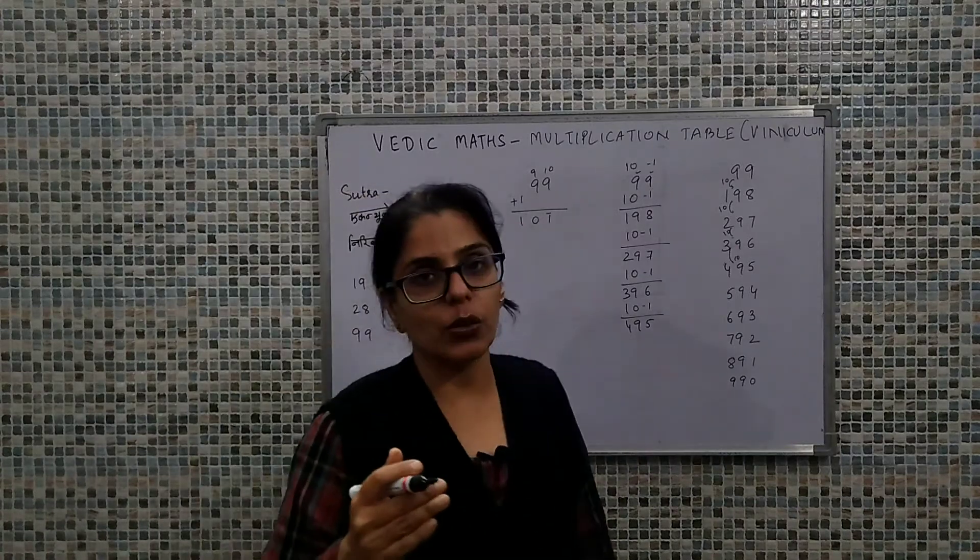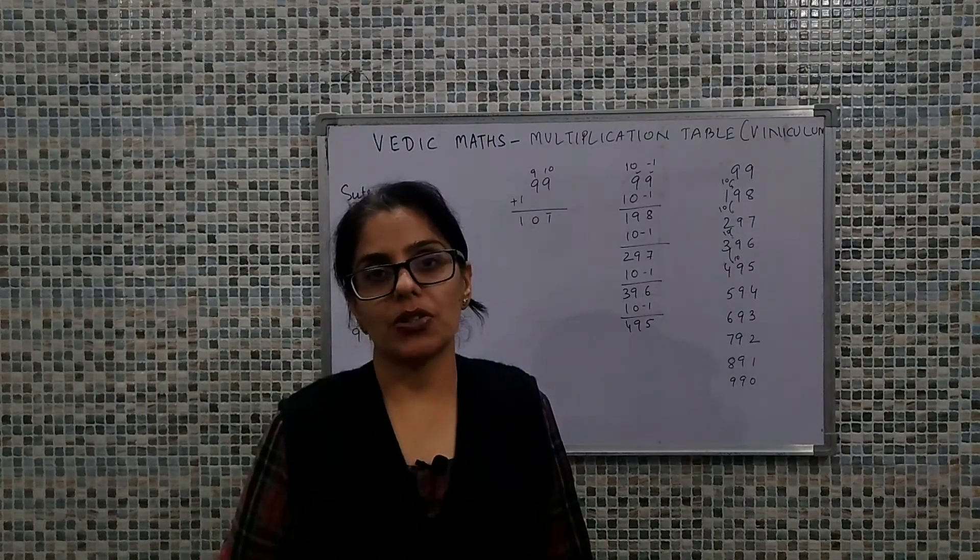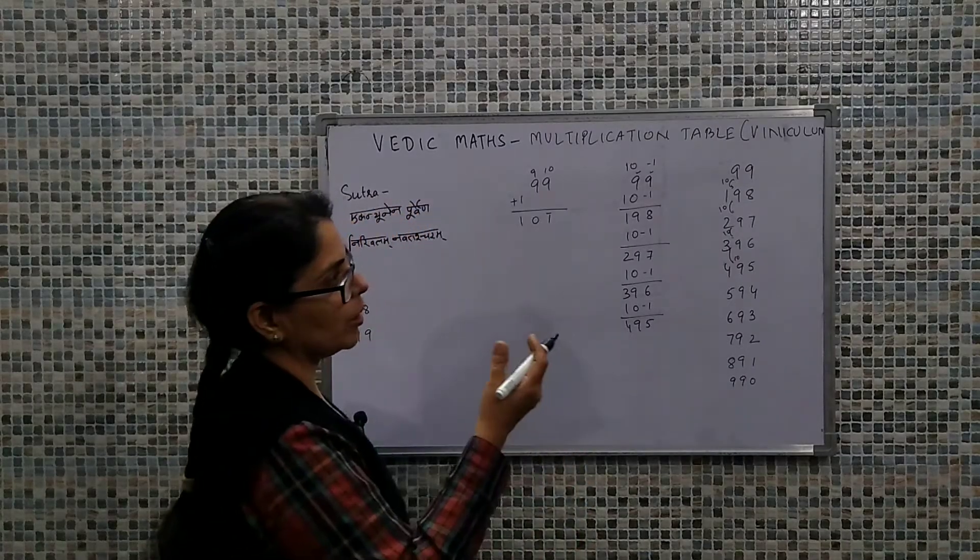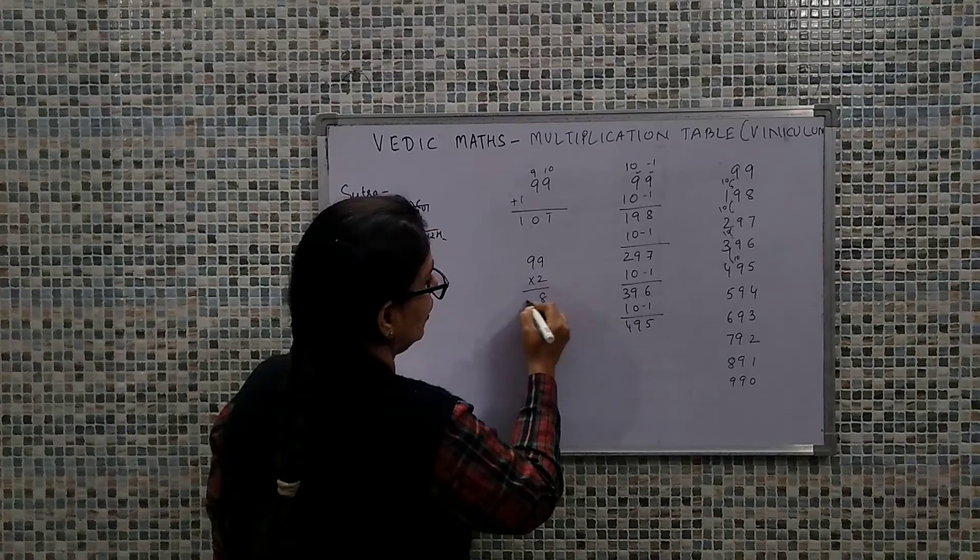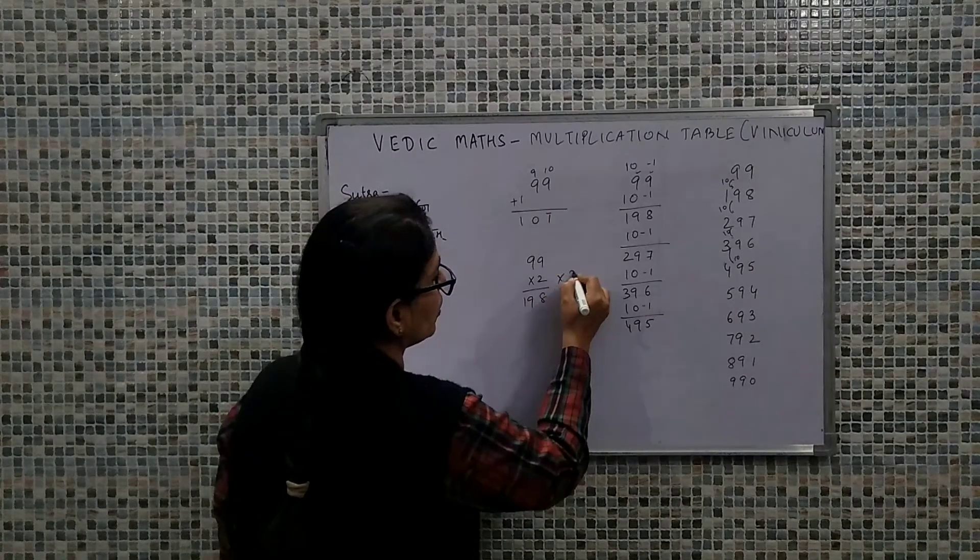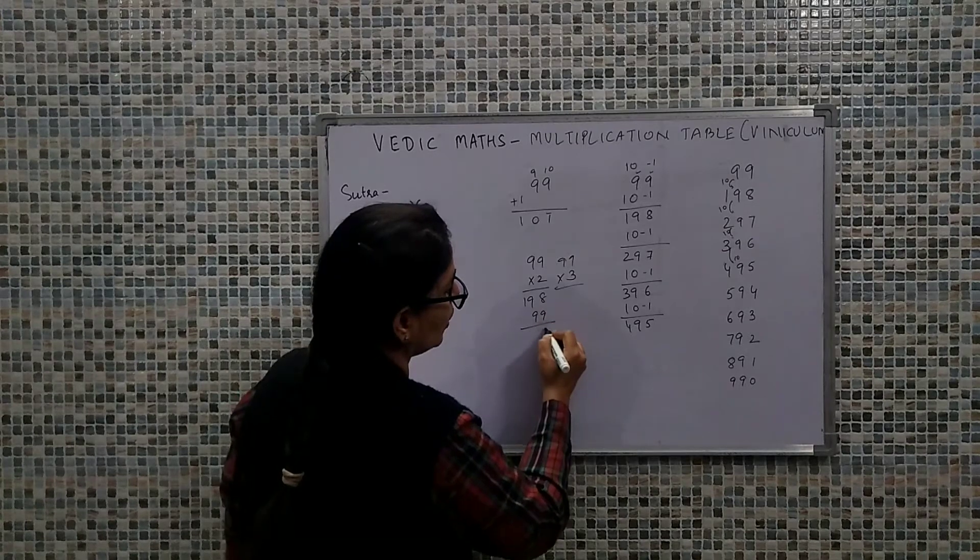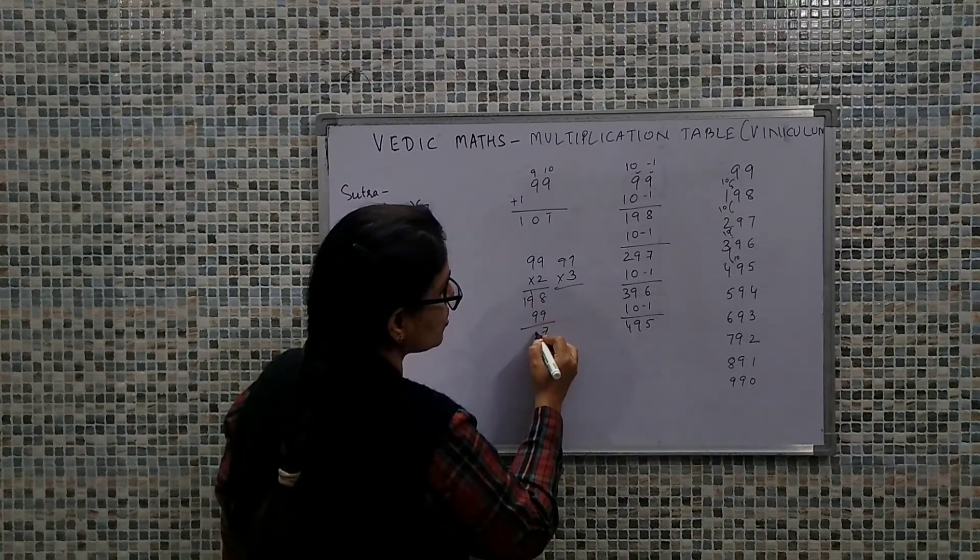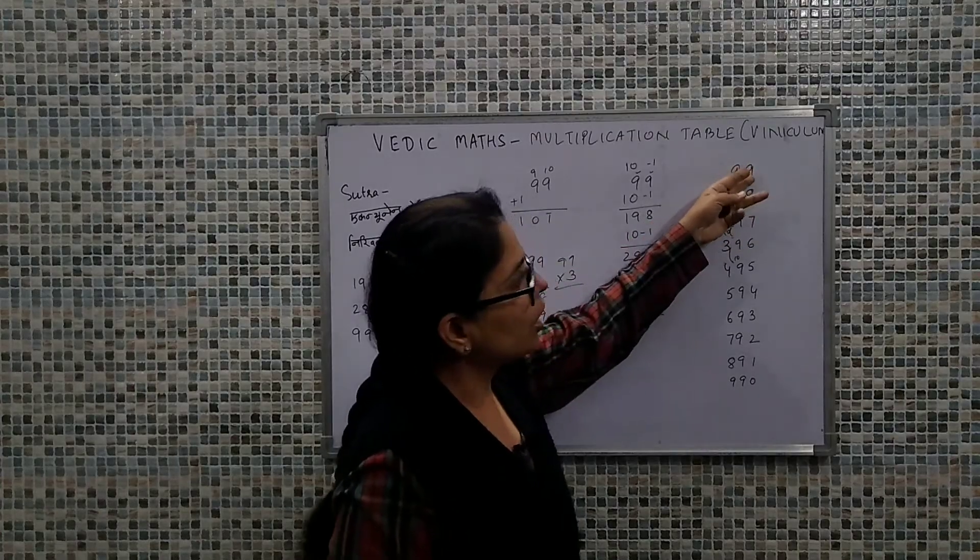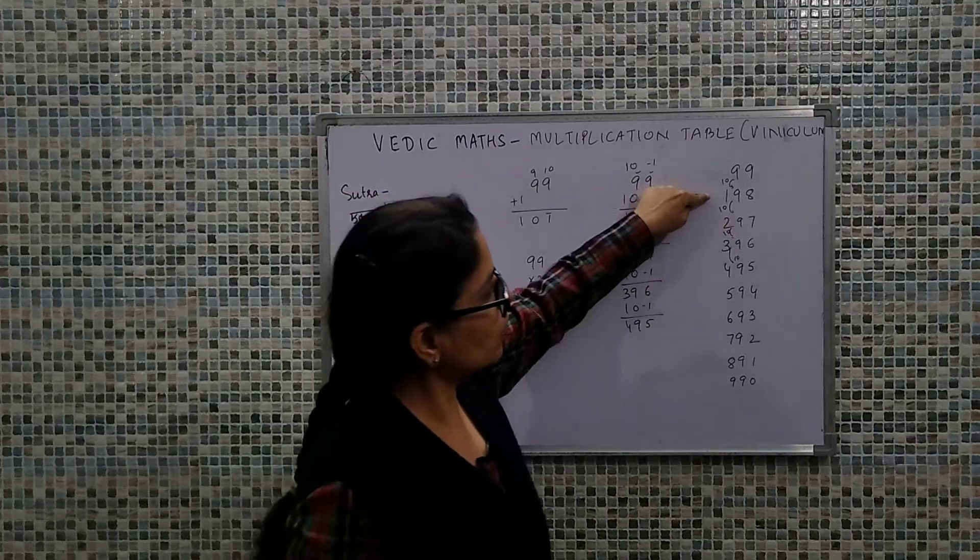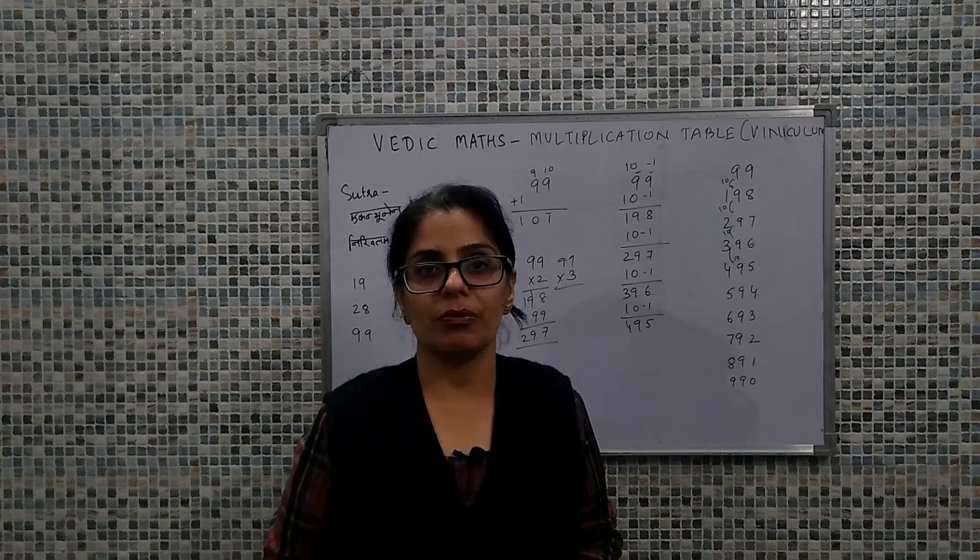So what we finally conclude is that by using the concept of viniculum we can really simplify the process of calculation for formation of the multiplication table, instead of using the conventional method. If we don't know this approach, then we have two options here: we have 99 into 2, and then if we want to use 3 table then we use 99 into 3, this was one approach. And the second possibility that we have is to add 99 repeatedly, and then we have to handle the carry and the complications. So there are a lot of mistakes. But here simply we are working with the smaller values: 1 is our minus 1, 1 is our plus 10. Simply we can identify with a sequence. So that was all about today's discussion. Thanks a lot.